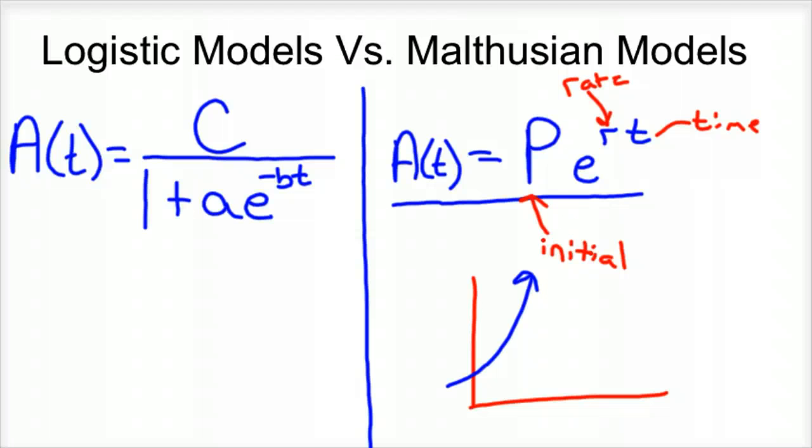The problem with that is it doesn't model populations very well, because as a population overpopulates or starts to use up its resources, that's probably not going to continue going up forever. At some point you're going to have a cap where you cannot sustain any more population, and you're going to have famines and things like that because of lack of resources. That's the Malthusian model, and it's what we've been using for continuous growth.